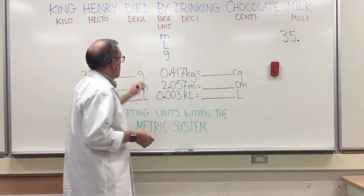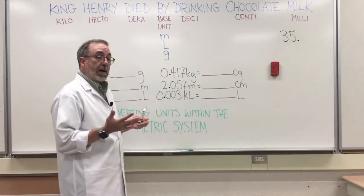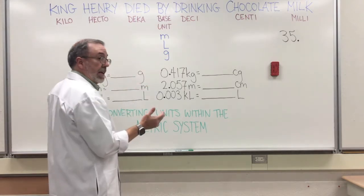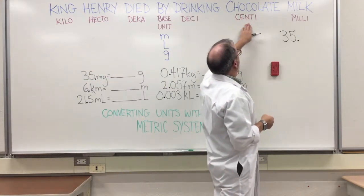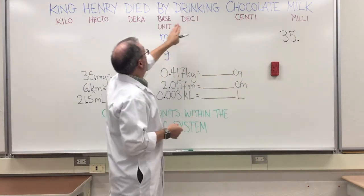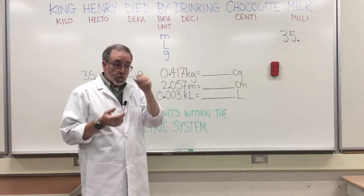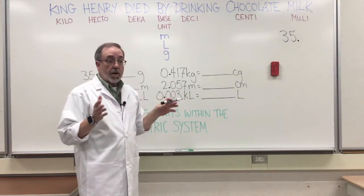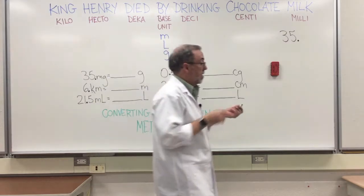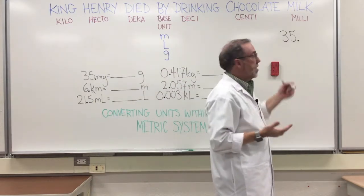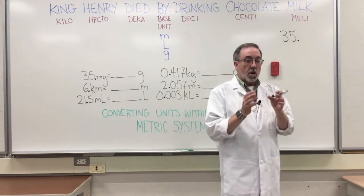We need to go to grams, which is here - this is the base unit. So which direction is the base unit from our number down there? It's to the left. And how many spaces do we have to bounce? Well, one, two, three. So that's what we're going to do. We need to go three to the left. So you're going to make your bounces between the numbers, not on the numbers. Go between them. So one, two, three, put your decimal.